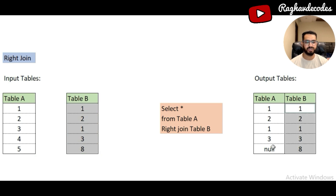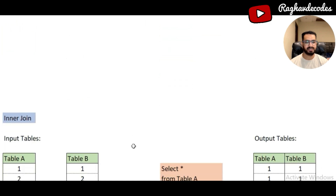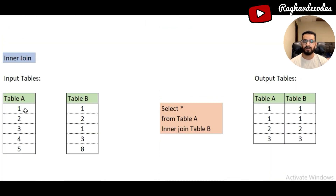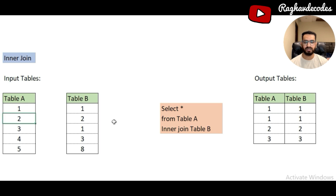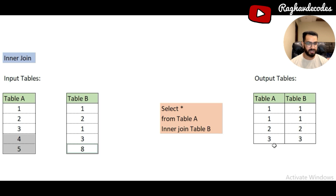The next part is the output of an inner join. In inner join, the output includes only the matched columns. Here you can see 1 from Table A joins with 1 from Table B giving 1 and 1, and again 1 from Table A joins with the other 1 from Table B giving another row. Similarly 2 joins with 2, and 3 joins with 3. This is the output of an inner join — only matched records. 4, 5, and 8 are no longer part of the output.